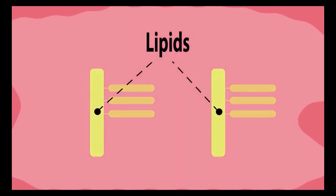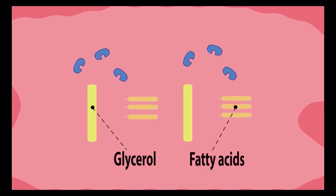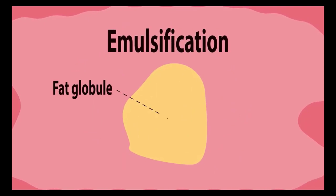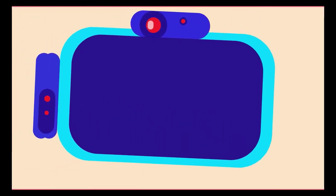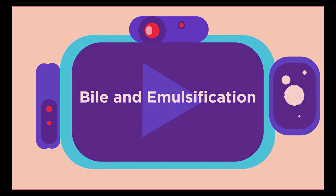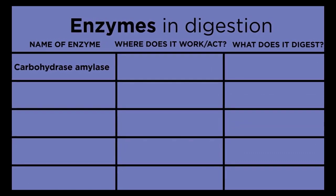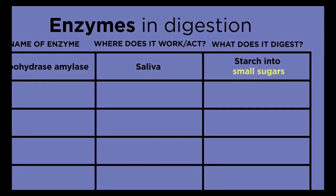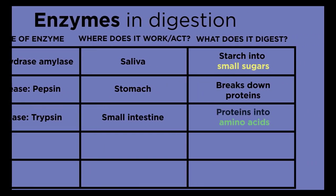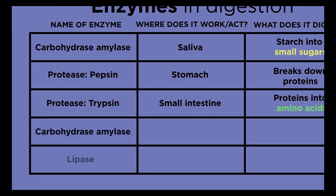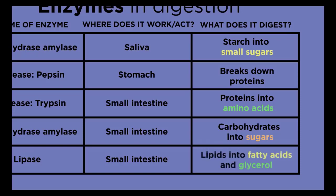Lipids are digested by enzymes called lipases into glycerol and fatty acids, but it requires a process called emulsification first. Emulsification breaks lipids into smaller droplets with a larger surface area for lipase enzymes to work on. To recap: amylase is released in saliva to digest starch; pepsin digests proteins in the stomach; trypsin further digests proteins into amino acids in the small intestine; amylase and lipase are also released from the pancreas into the small intestine to digest carbohydrates and lipids.